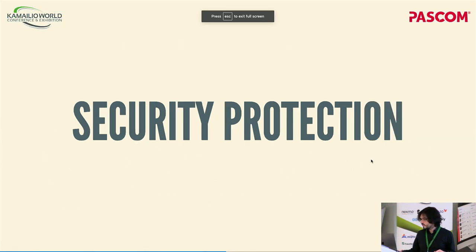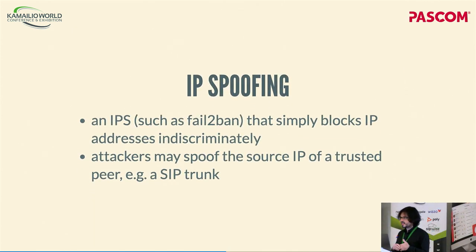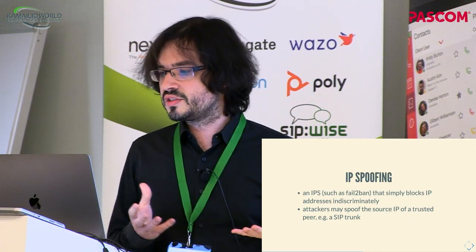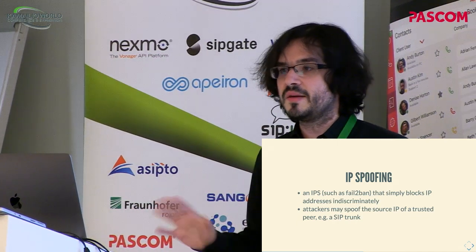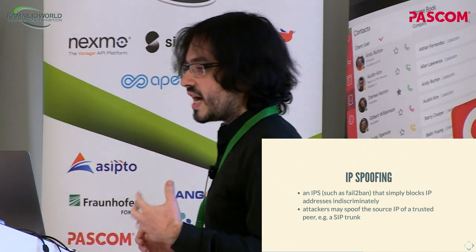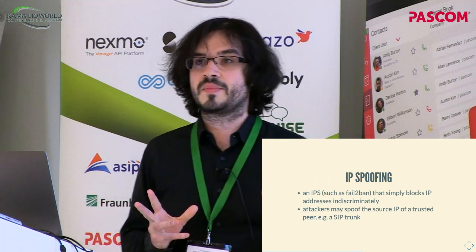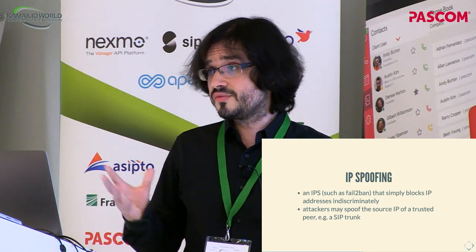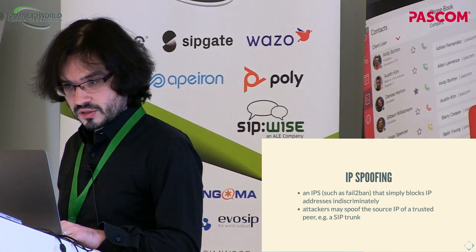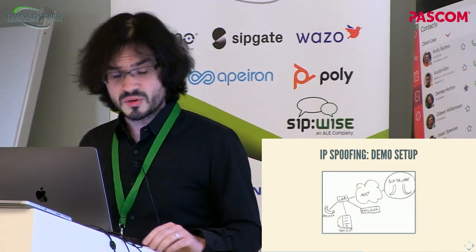Next: security protection. I'm going to talk about IP spoofing, which Henning actually alluded to. If an IPS such as fail2ban simply blocks any IP address that attacks it indiscriminately, then you probably have a problem. Attackers can spoof any source IP address if they have the right server. In this case, we see a SIP trunk being spoofed — we have a demo for this.